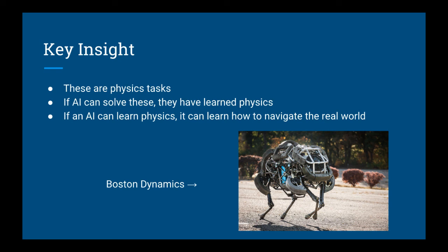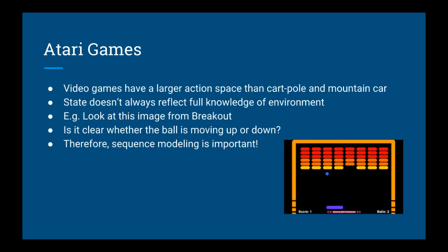There are already companies out there doing it — here's an example of one of the robots from Boston Dynamics, so you know this stuff really works. After cart pole and mountain car, we'll look at one or more Atari games. Playing video games is an essential step we must take in order to build intelligent agents for the real world. Video games contain a larger set of actions than cart pole and mountain car, and the states don't necessarily reflect full knowledge about the environment. For example, with the game Breakout, you can't tell whether the ball is moving toward the paddle or away from a static image — so sequence modeling becomes important.